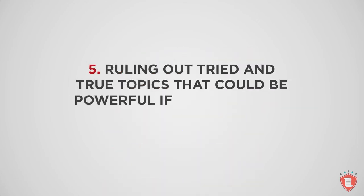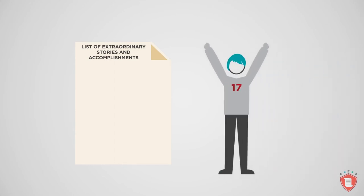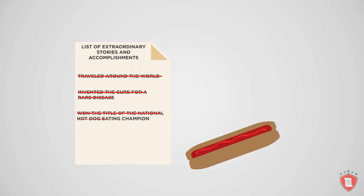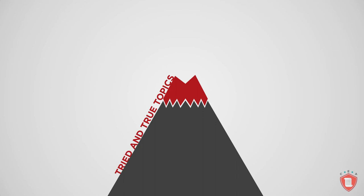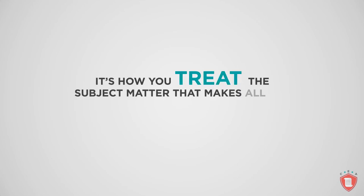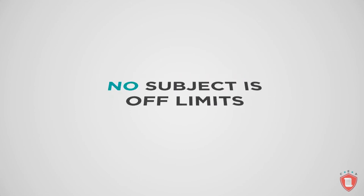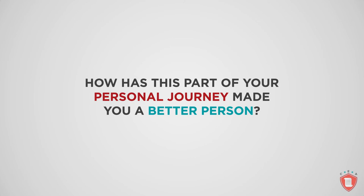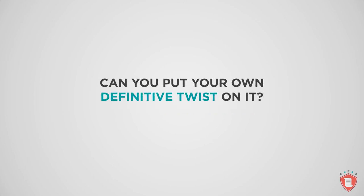Ruling out tried-and-true topics that could be powerful if handled with sincerity and creativity. Not everyone has racked up a list of extraordinary stories and accomplishments at age 17, but every 17-year-old can tell his or her average and inspiring life stories in new and inventive ways. Admissions officers aren't expecting you to have traveled around the world, invented the cure for a rare disease, or won the title of National Hot Dog Eating Champion. Just because a subject is common doesn't mean it's a topic to be avoided — it's how you treat the subject matter that makes all the difference. Can you put your own definitive twist on it?